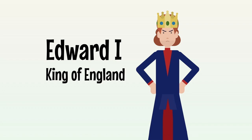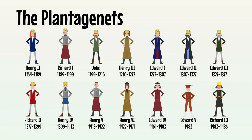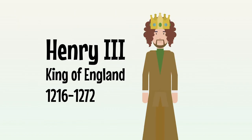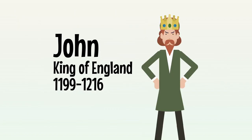Edward I was king of England for 35 years, from 1272 to 1307. He's the fifth of 14 Plantagenet kings who ruled England between 1154 and 1485, the son of Henry III and grandson of King John, who we covered in previous videos.